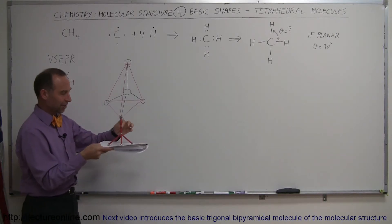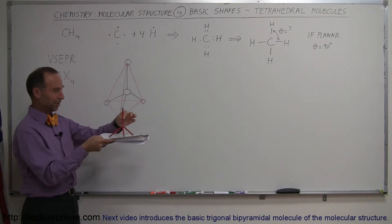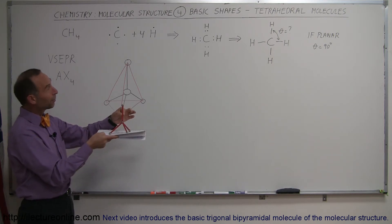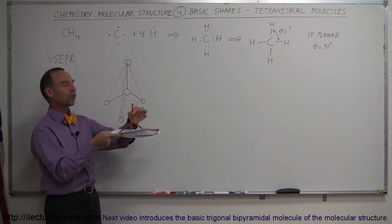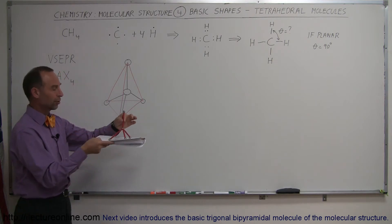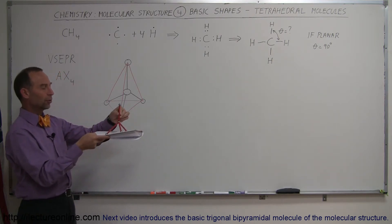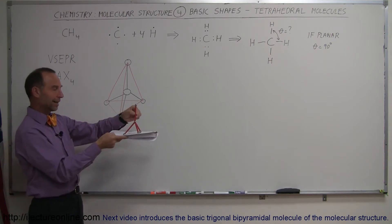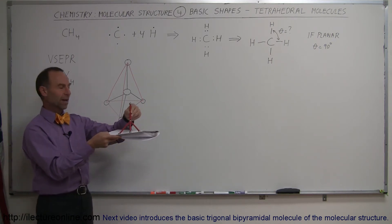Okay, welcome to iLecture Online. Here we're going to talk about our next shape called the tetrahedral molecule. Tetrahedral molecules have one central molecule, as you can see, and four molecules that are at the very ends of the four bonds that it makes.